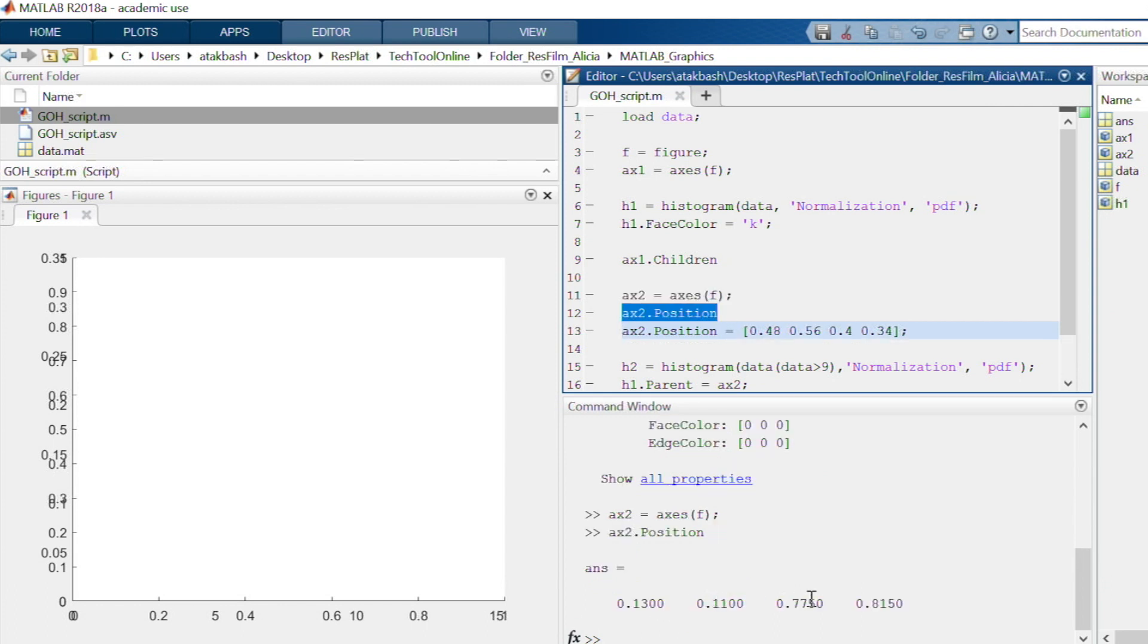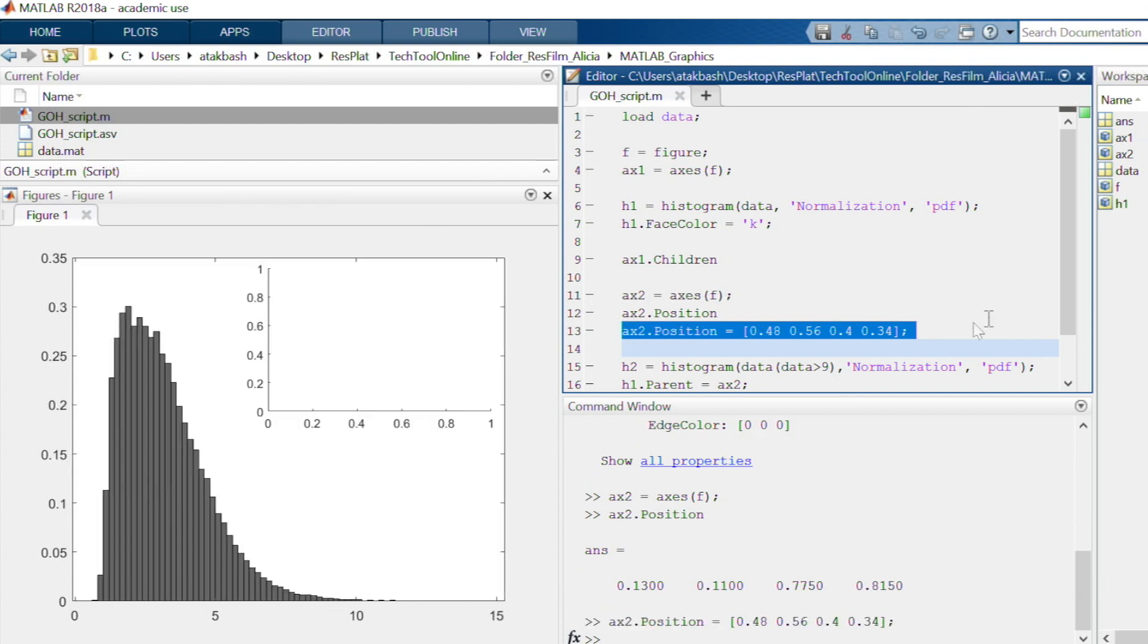So, here you can see the position of x2. The input indicates the left and bottom position, its width and height. Now, I will modify the x2 position so that it functions as a smaller axis within the first axis.